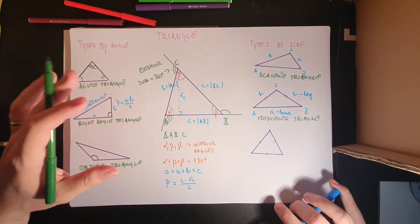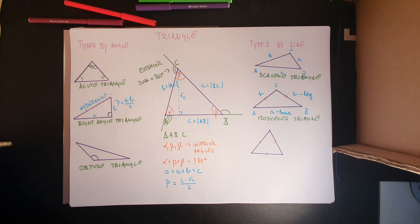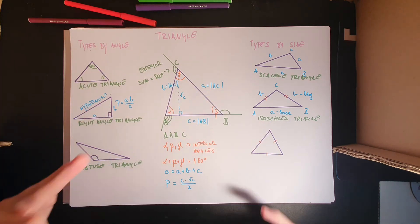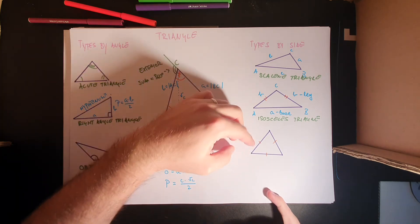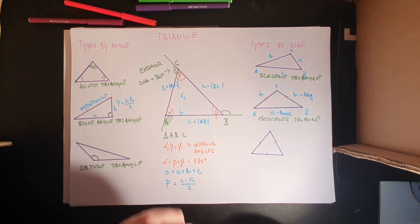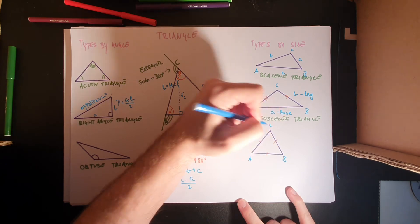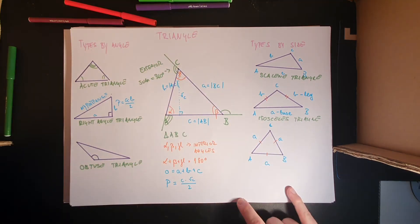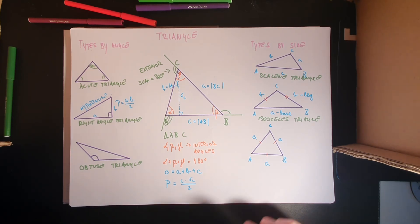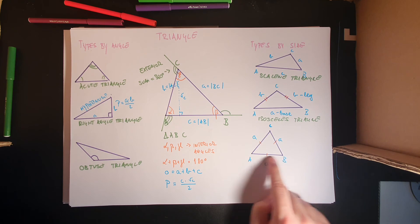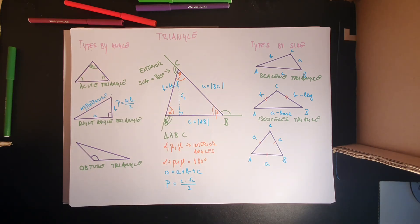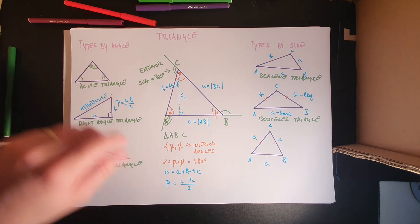The isosceles triangle has specific properties we'll explore in tasks. The word 'isosceles' refers to the two equal legs. The last type has all three sides equal in length — sides a, b, and c are all the same. We can call all of them legs, and this triangle is called an equilateral triangle.